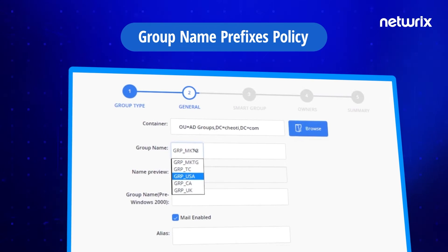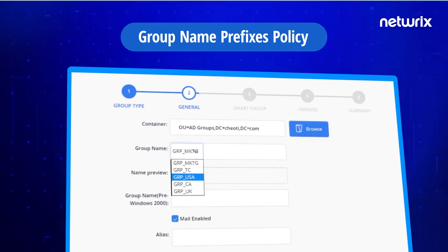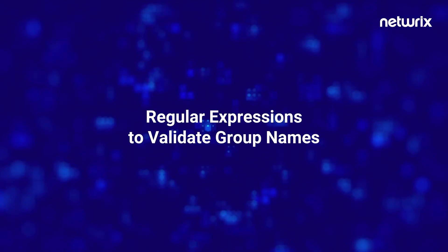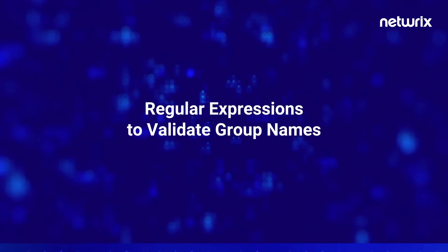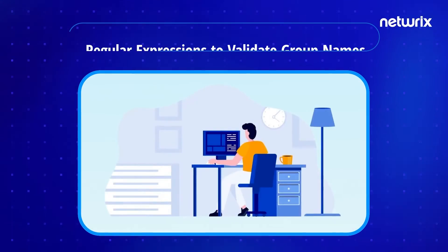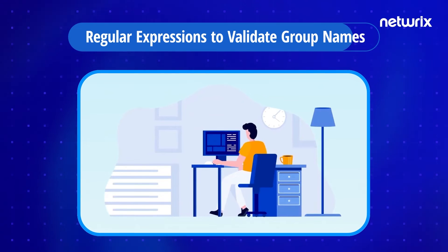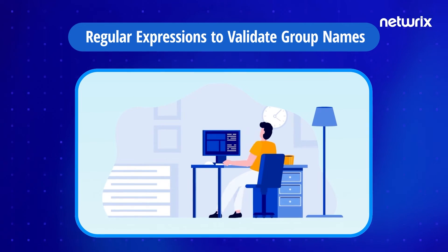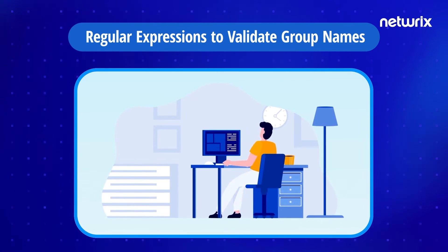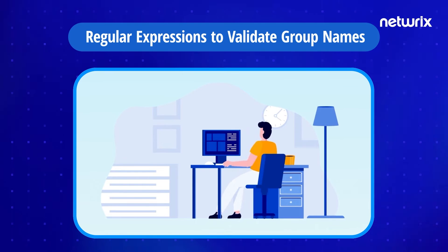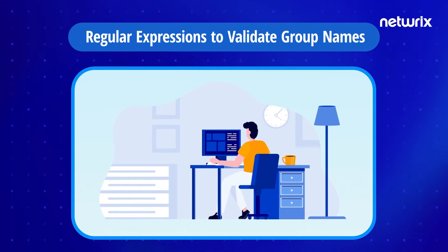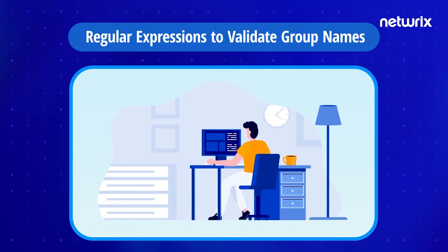The figure here shows how group naming prefixes are displayed to the user while creating a group through the Group ID self-service portal. In this group name, GRP_USA is the prefix for the marketing group, which shows that this marketing group relates to the team operating in the United States.